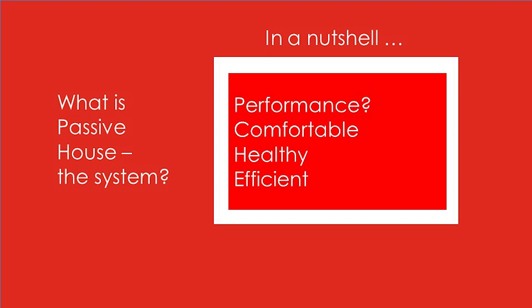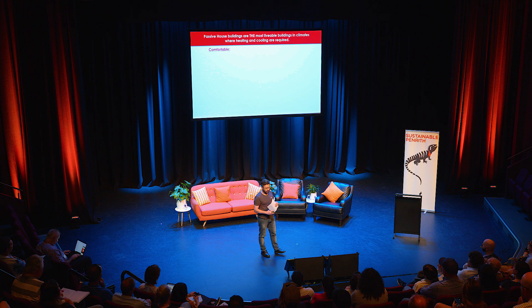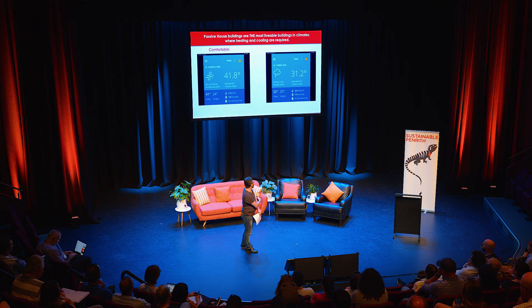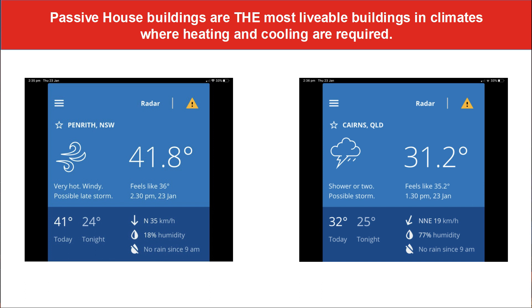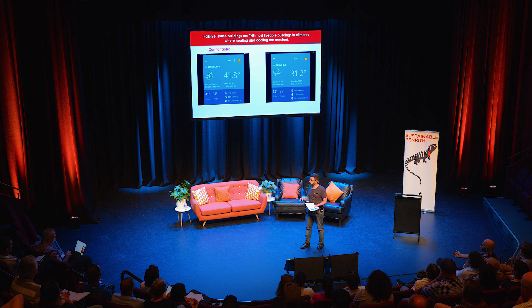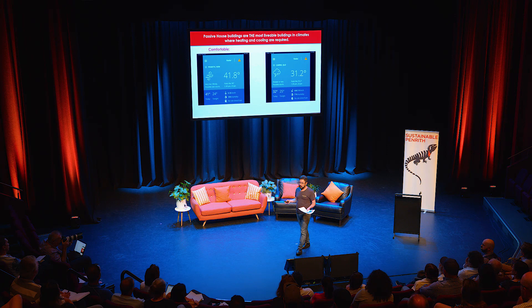Let's define performance. We want our buildings to be comfortable, we want them to be healthy and we want to do this in an efficient manner. Comfort is made up of three factors: air temperature, air movement and humidity. Looking at the Bureau of Meteorology app screenshots, in the Penrith example a 41 degree day actually felt cooler at 36 because of a strong breeze and very low humidity at 18 percent. Conversely in Cairns a 31 degree air temperature day felt hotter at 35, partly because of lower breeze but more importantly because of really high humidity at 77 percent.